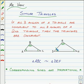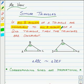We have similar triangles any time that we can show all three angles of one triangle are congruent to all three angles of a second triangle.